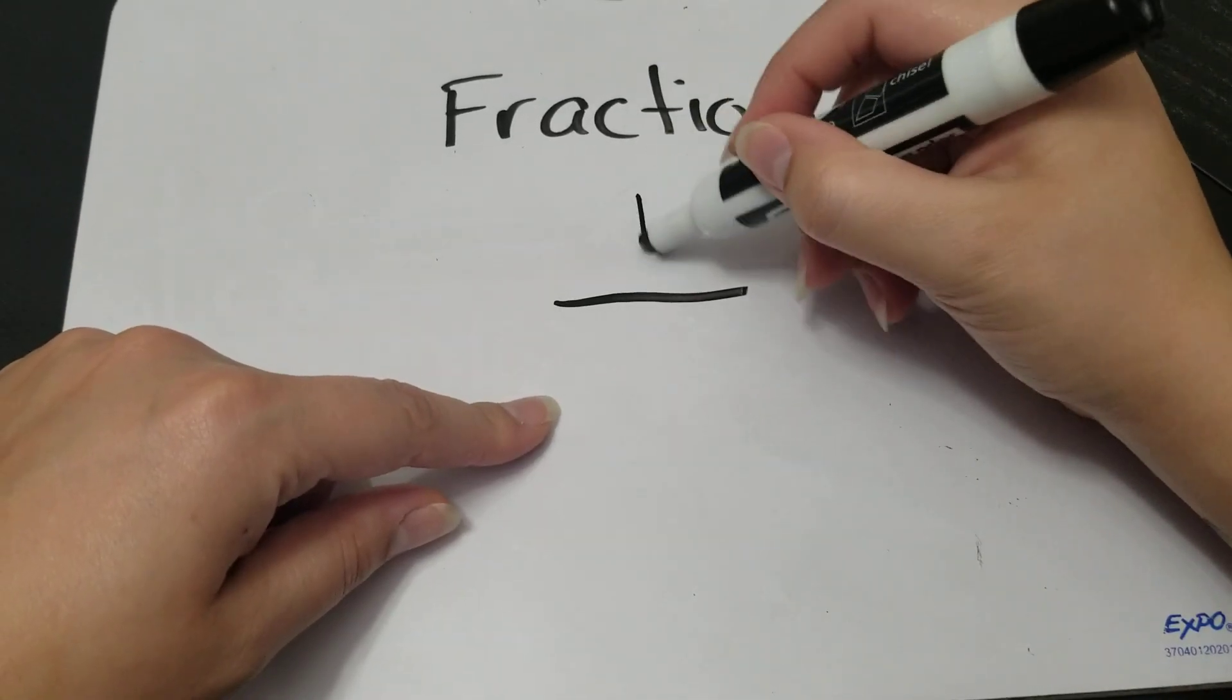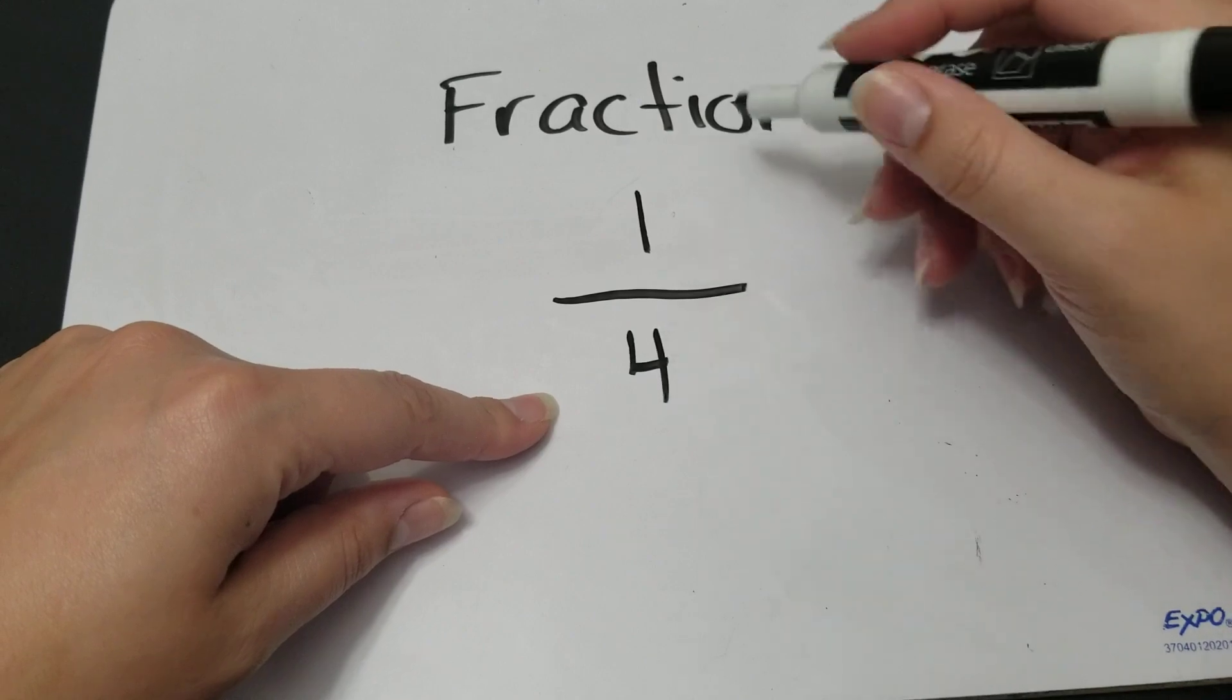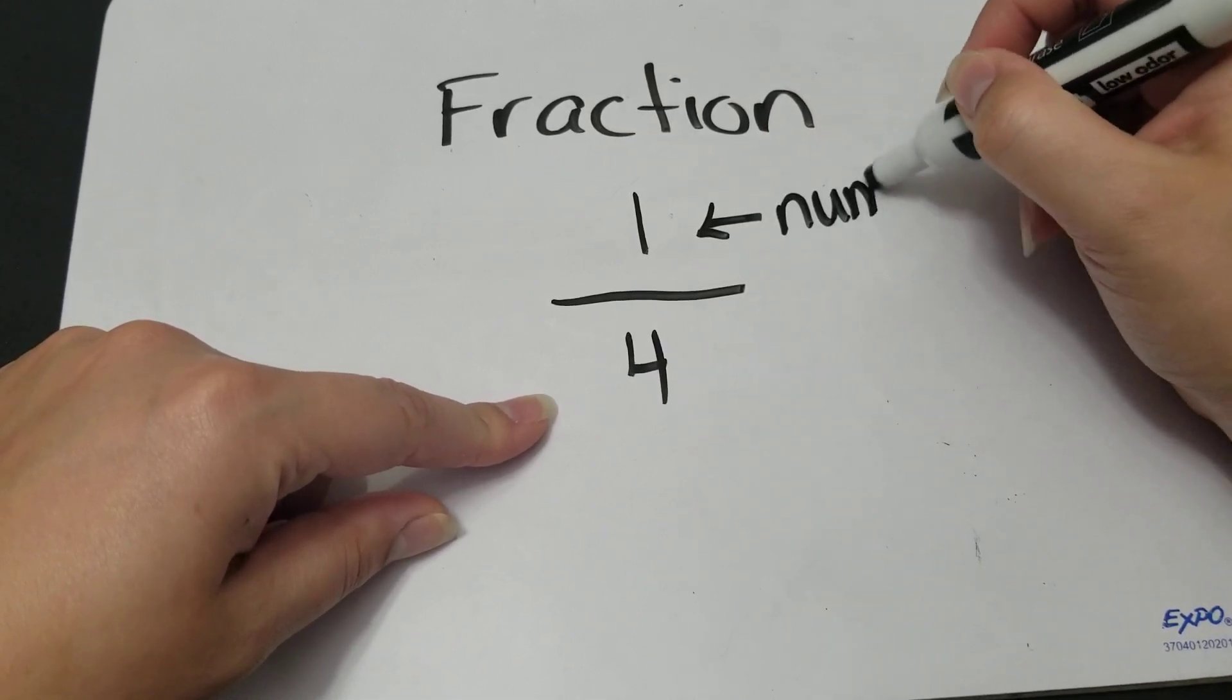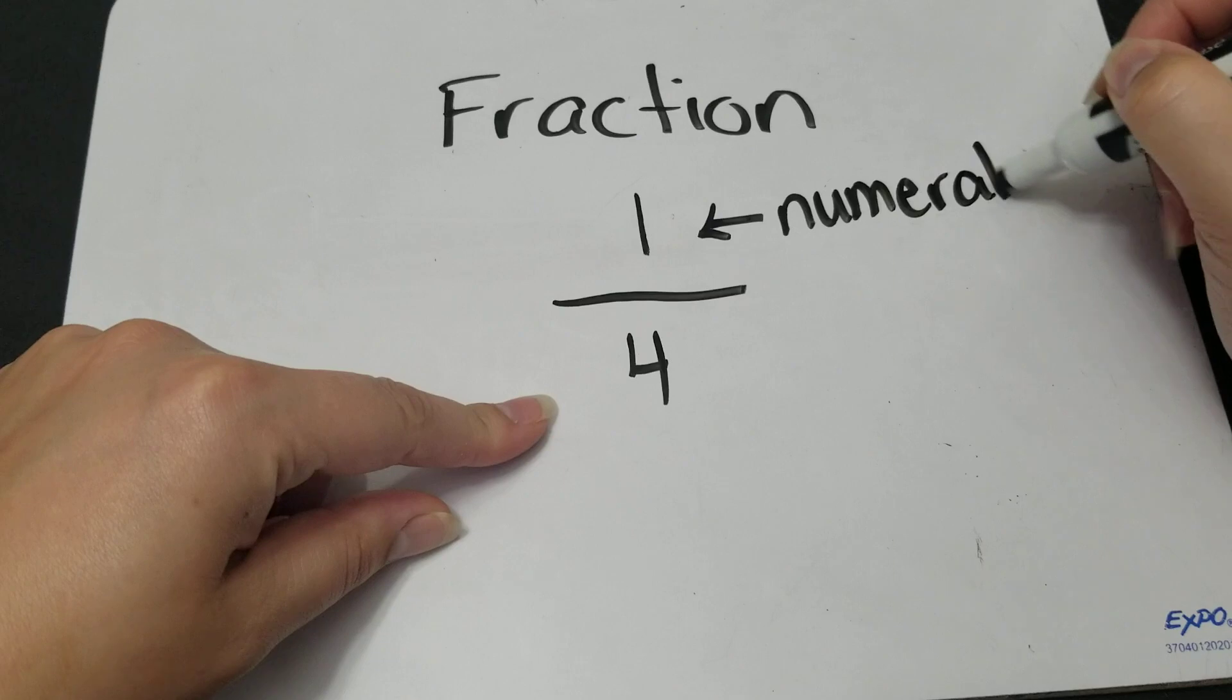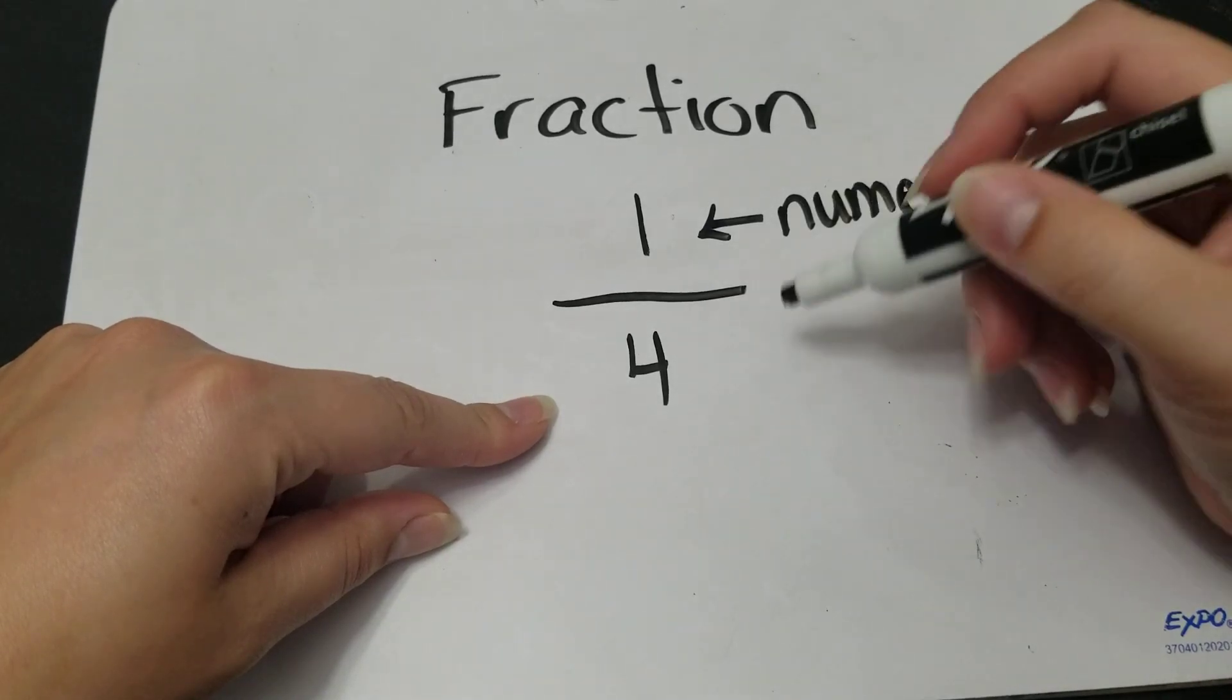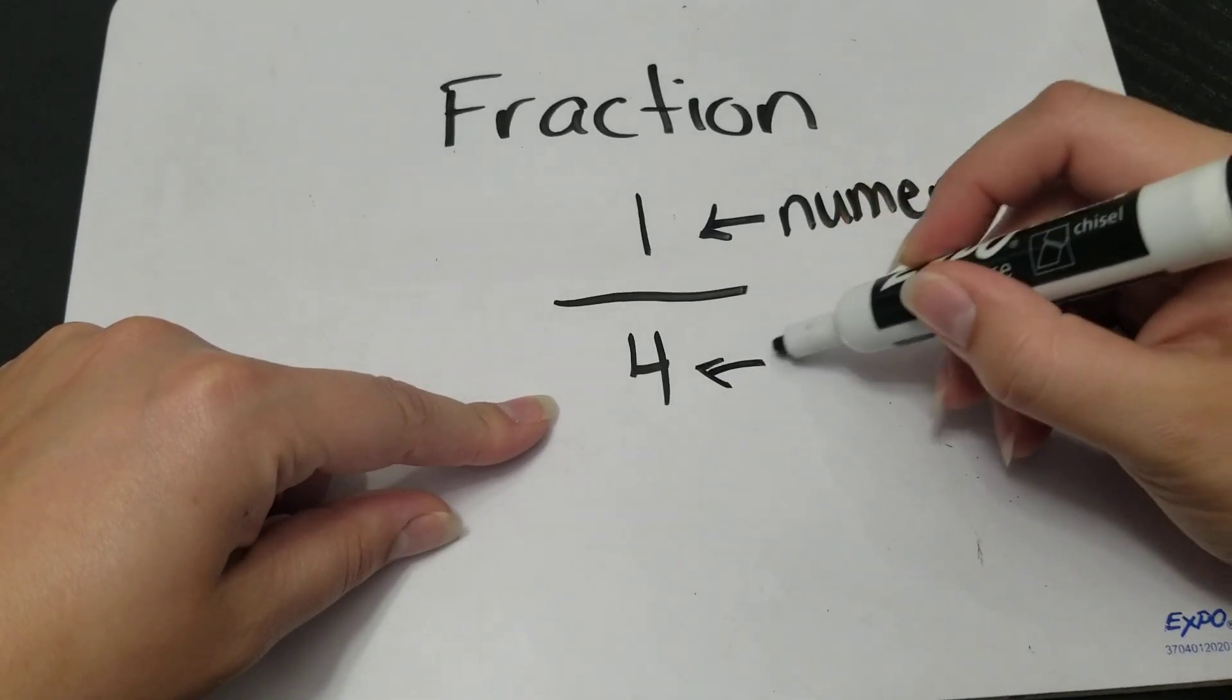So you could have a 1 on the top and a 4 on the bottom. This number is called the numerator. It's the top number. And this number is called the denominator.